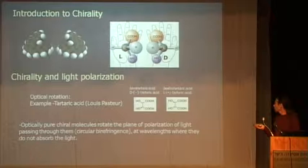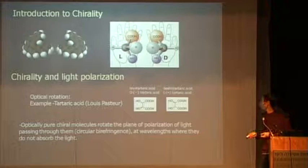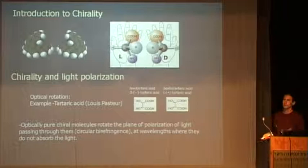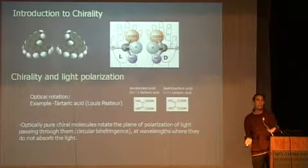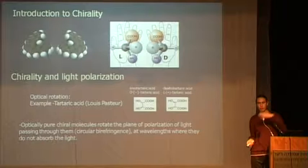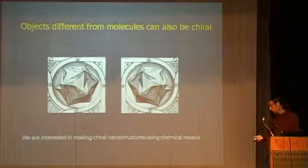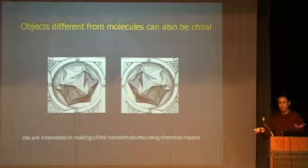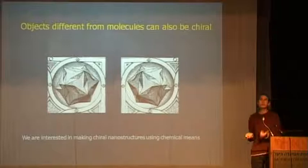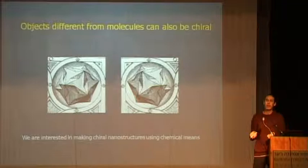An important effect that chiral molecules have is that when you get molecules of one certain handedness, they affect the polarization of light. When you pass light through these molecules, you get a rotation of the plane of polarization — also called circular birefringence. You can also think about random objects, not just molecules, having chirality. It is easy to get chirality in random objects. We are interested in making inorganic nanostructures that will have chirality, not small molecules.